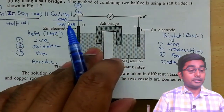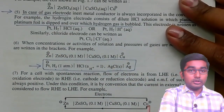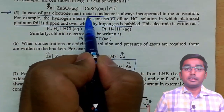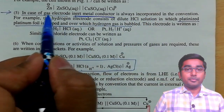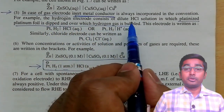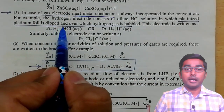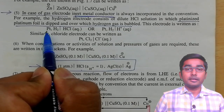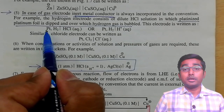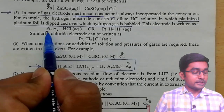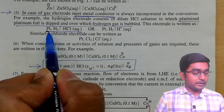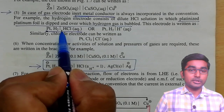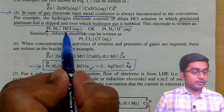Rule number 5: in case of a gas electrode, an inert metal conductor is always used. For example, the hydrogen gas electrode consists of a dilute acid solution in which a platinized platinum foil is dipped, over which hydrogen gas is bubbled. To represent a gas electrode, you always need an inert metal support over which a gas is bubbled. First, always write the metal name, then the gas name, and this is dipped in the aqueous ionic solution. The single vertical line shows that this metal is in contact with the ionic solution.